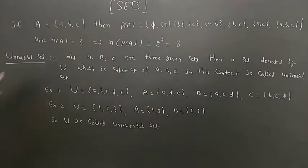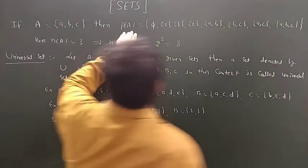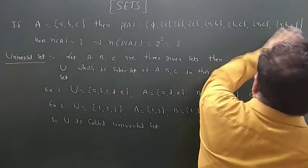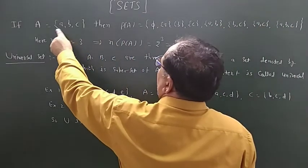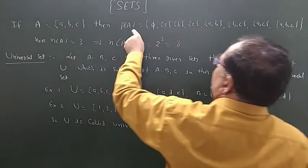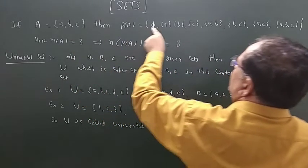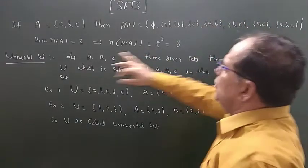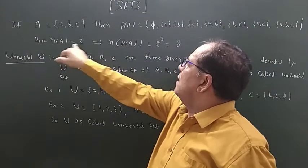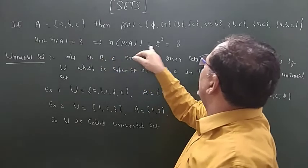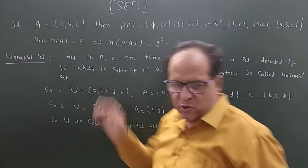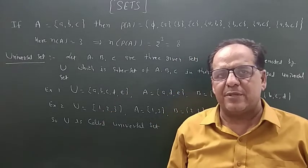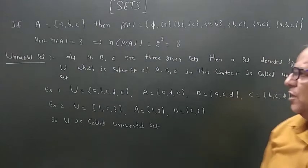Similarly, if A = {A, B, C}, then the power set of A is: {phi, {A}, {B}, {C}, {A,B}, {B,C}, {A,C}, {A,B,C}}. If the number of elements in set A is 3, then the number of elements in P(A) is 2³ = 8. So the number of subsets of any set and the number of elements in its power set are the same quantity — both equal 2^n.